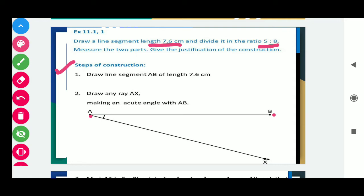Second, draw any ray AX making an acute angle with AB. Students, how to draw this? You have to just reverse your notebook, make a semicircle by using the compass, and mark an arc and join this one. You have to make an acute angle.